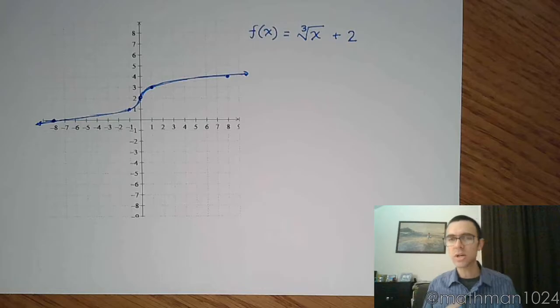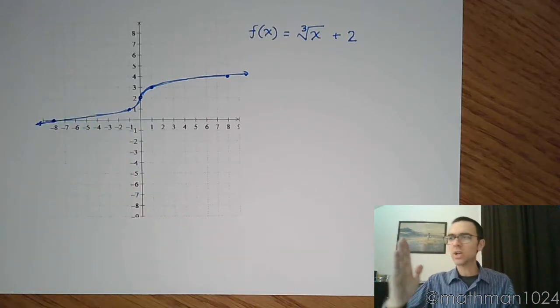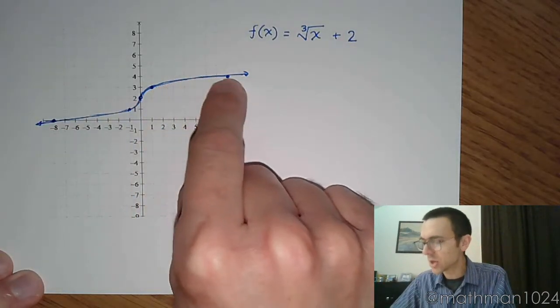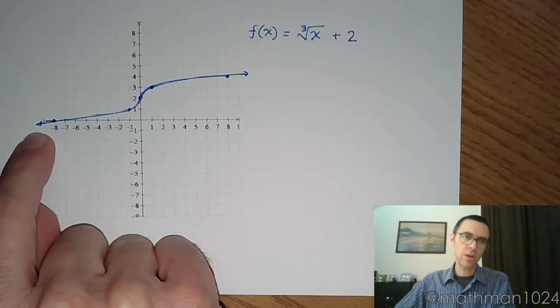Because if it's a one-to-one function, we can talk about the inverse. And you can see that this guy is going to pass the horizontal line test. This guy is curving, but he never curves back down. He's still getting higher and higher, and lower and lower here on the left.